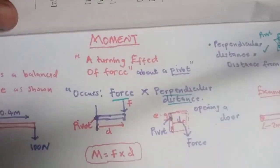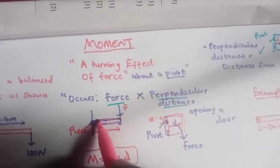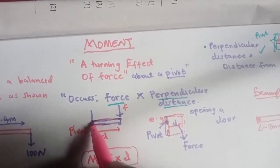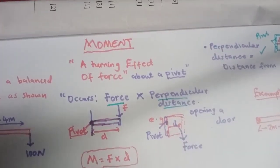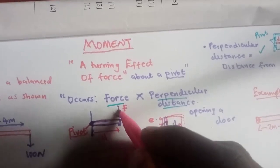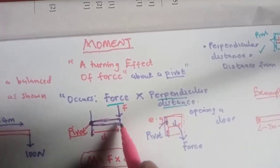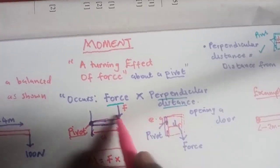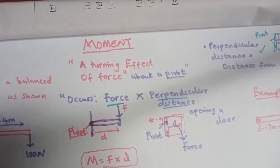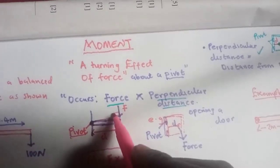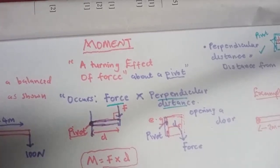Let's look at this scenario. You have an object attached somewhere — the point of attachment is where the pivot is. You are applying a force here, and this is the distance. The distance should be from the force to the pivot, and it must be perpendicular, meaning it should make a right angle.